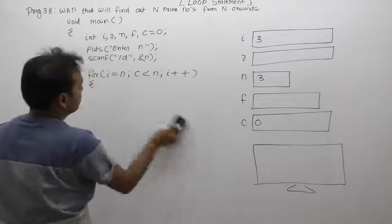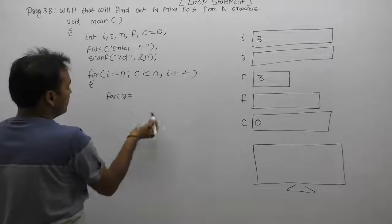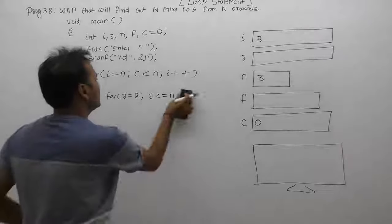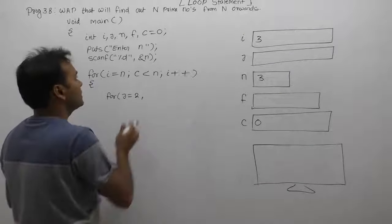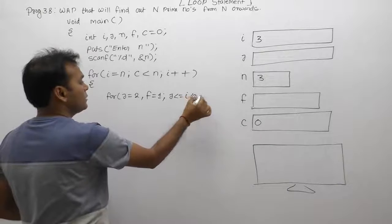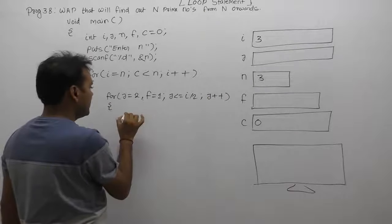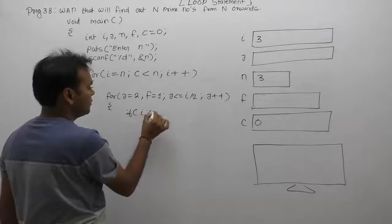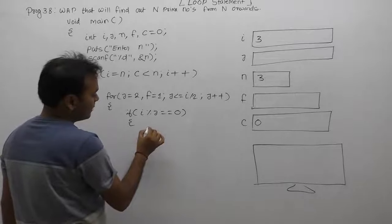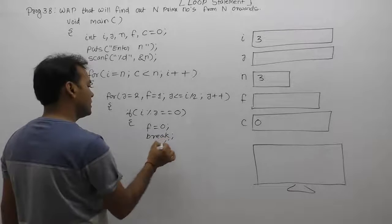For the inner loop: initialize J equal to 2, and also initialize flag F equal to 1. The inner loop condition is J less than or equal to I divided by 2, with J++ each iteration. Inside the inner loop, we have an if condition: if I modulo J equals 0, then set flag F equal to 0 and break — terminating the inner loop, not the outer loop.